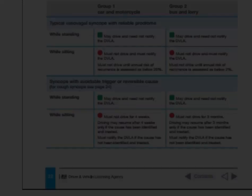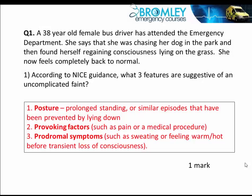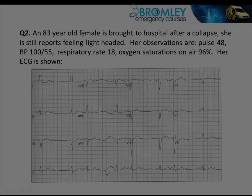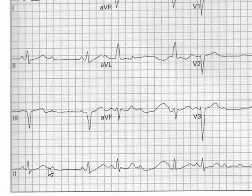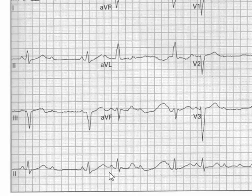So let's go back now and look at the questions we set at the beginning of this tutorial and look at some possible answers. The first one is this 38-year-old female bus driver. Looking at her QRS complexes — here we've got a P wave, then a gap, P wave QRS, P wave QRS, P wave.